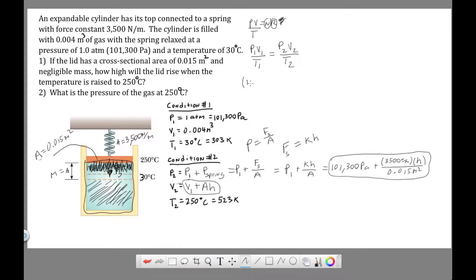P1 is 101,300 pascals. V1 is 0.004 cubic meters. T1 is 303 Kelvin. P2, we're going to plug in, 101,300 pascals plus 3,500 newtons per meter times H over 0.015 meter squared. And then times V2, which is V1 plus AH.